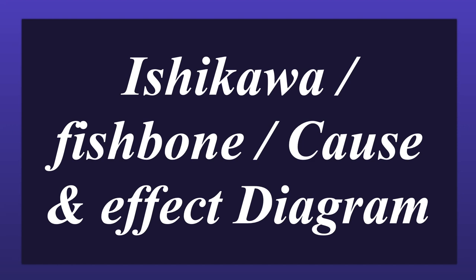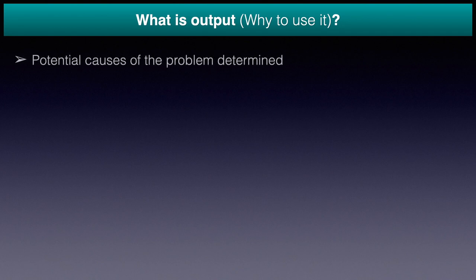Ishikawa Diagram. At the end of this video, you'll be able to use the Ishikawa Diagram to identify potential causes of any problem. The problem can be anything such as you being in a lot of bad debt, high number of customer complaints or accidents in an organization, high number of crimes in a city or country, etc. I strongly recommend you watch my video on structured brainstorming prior to this video. The output expected from the Ishikawa Diagram is potential causes of problems identified. It helps only to find out potential causes of a problem or non-conformity; further validation of causes needs to be done to find the causes and root causes.